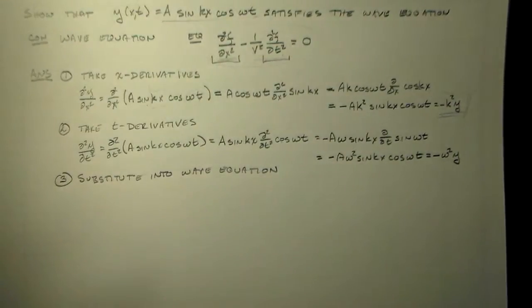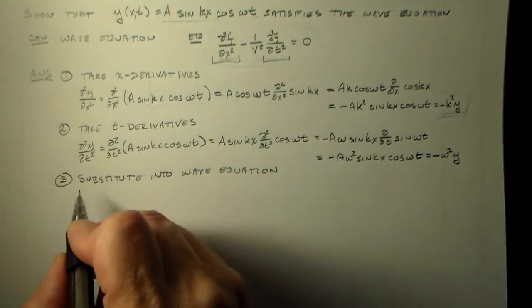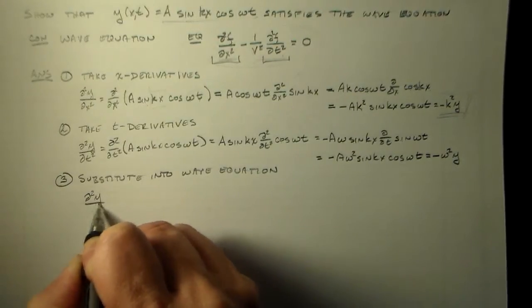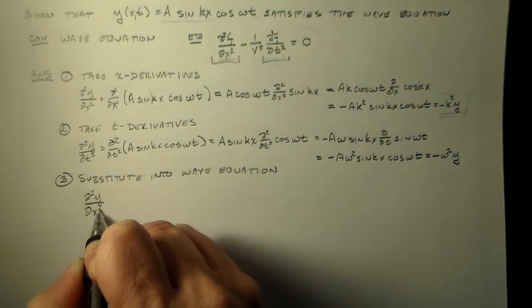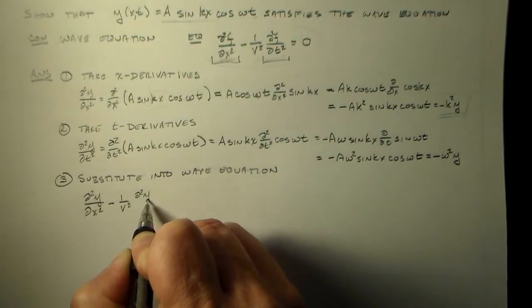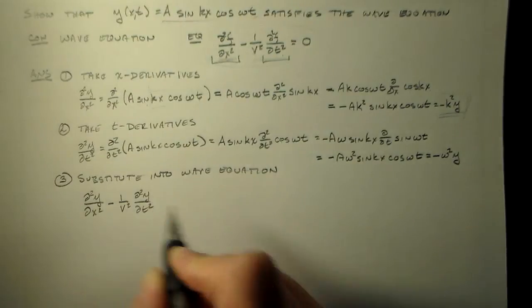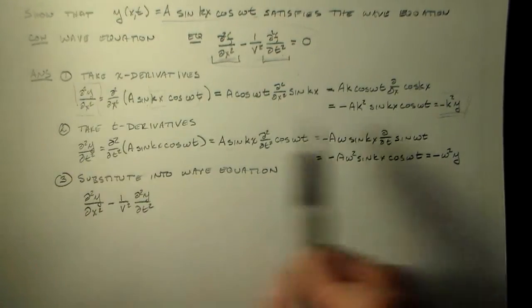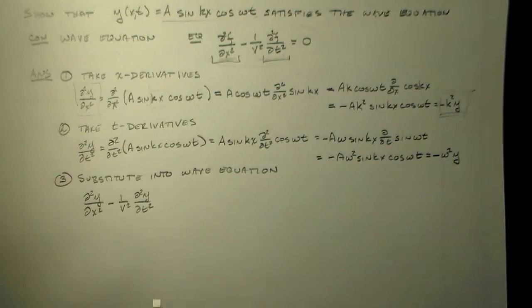Okay, and when I substitute into the wave equation, that's d squared y dx squared minus 1 over v squared d squared y dt squared. Since I've done this, I've done this already, I know that d squared y dx squared is just this minus k squared y.